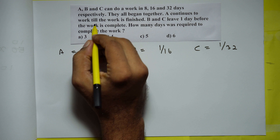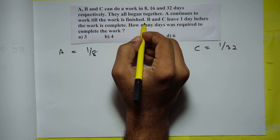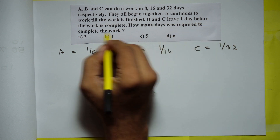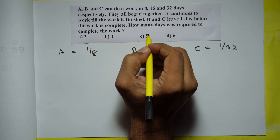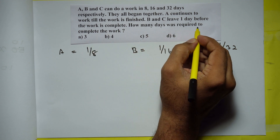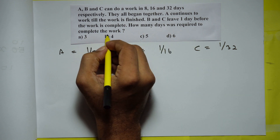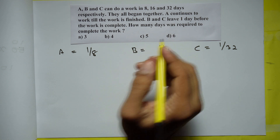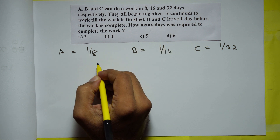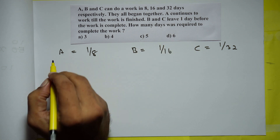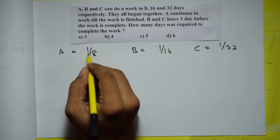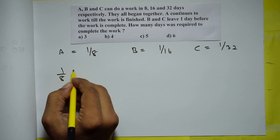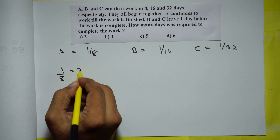A continues to work till the work is finished, and B and C leave 1 day before the work is complete. How many days were required to complete the work? We will assume that the whole work was done in X days, and every day A will do 1/8th of the work for X days.